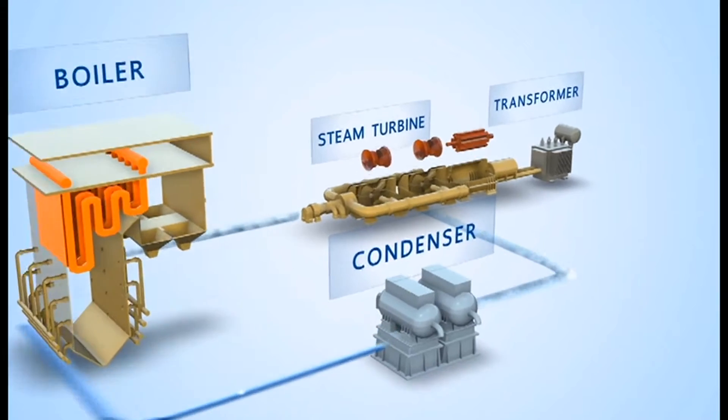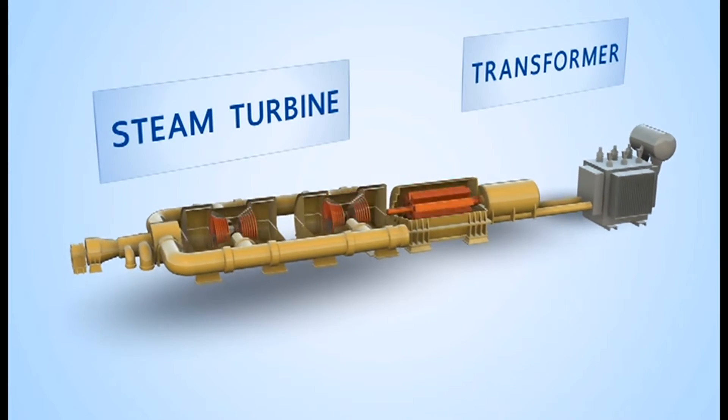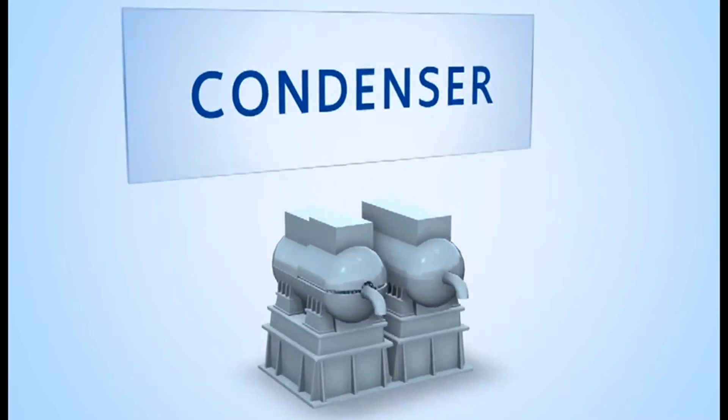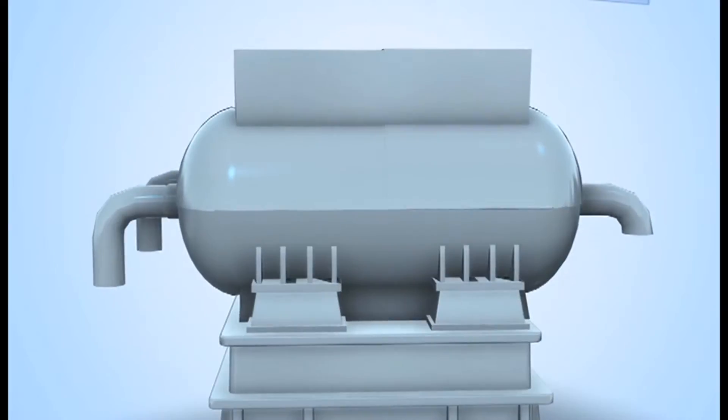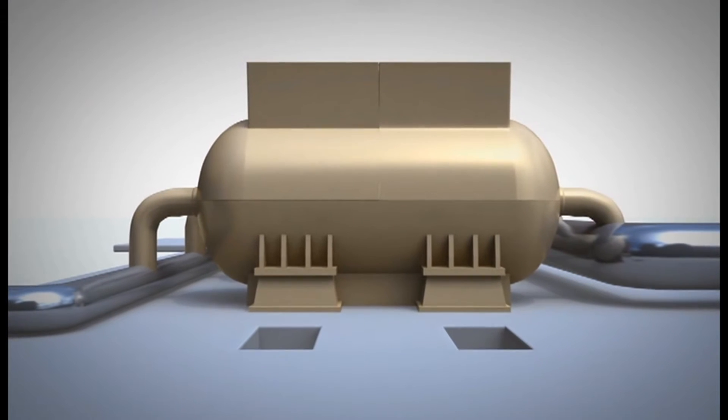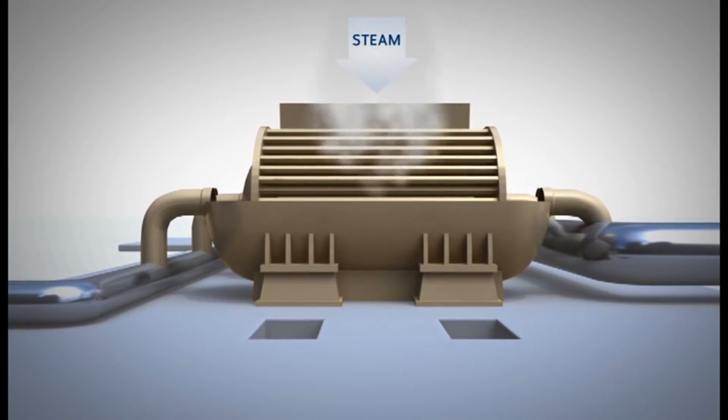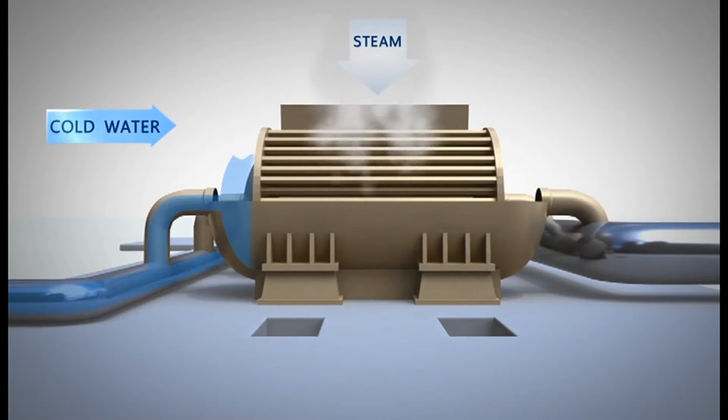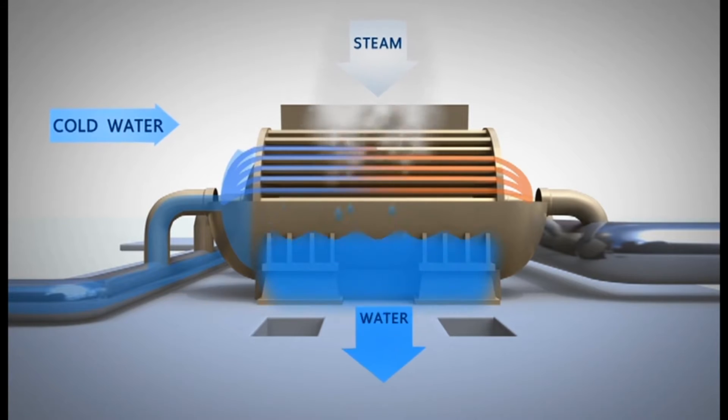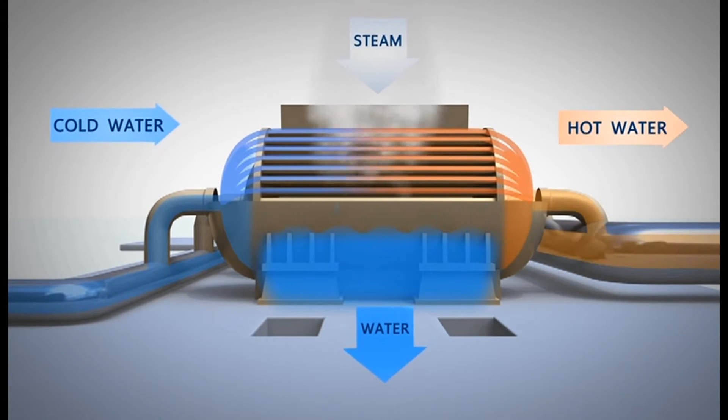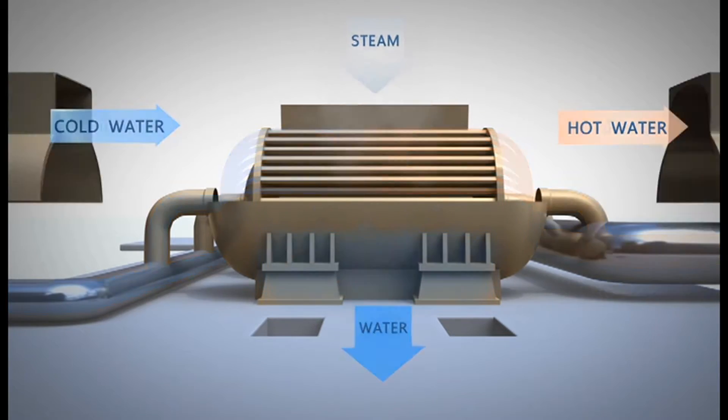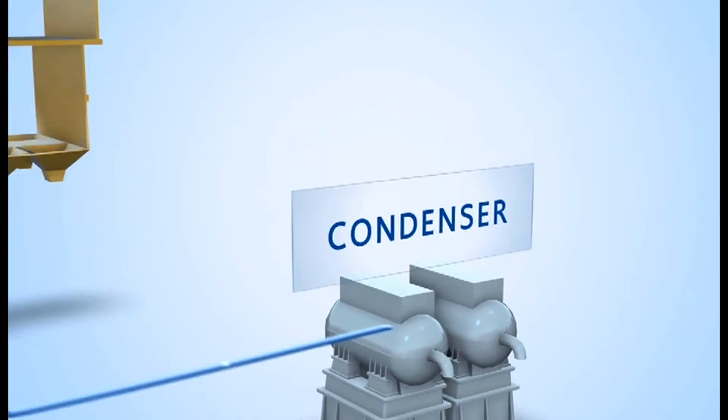The steam that passes through the steam turbine will go to the condenser to transfer the heat to the water in the cooling system. The steam will be condensed back into water and will be sent back to be boiled into steam in the combustion chamber for spinning the steam turbine again. This cycle happens in the closed system.